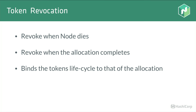Finally, token revocation. The Vault server holds the token accessor. When a node dies or an allocation completes — the task ran, used its Vault secret, got its database credentials, and exits gracefully — we revoke that token. This binds the token lifecycle to that of the allocation. We don't trust that the Vault token wasn't leaked, perhaps accidentally logged to Splunk. So as soon as the allocation finishes and could no longer be using that Vault token, we revoke it, and any secret generated by Vault is immediately inaccessible.